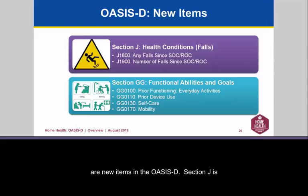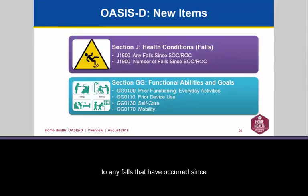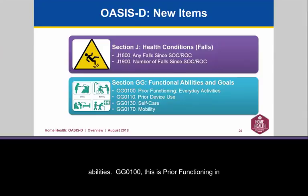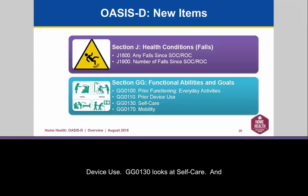There are new items in the OASIS-D. Section J is titled Health Condition Falls. J1800 refers to any falls since SOC-ROC — start of care or resumption of care. J1900 looks at the number of falls since SOC-ROC. Section GG looks at specific functional abilities and goals: GG0100 is prior functioning in everyday activities, GG0110 is prior device use, GG0130 is self-care, and GG0170 addresses mobility.